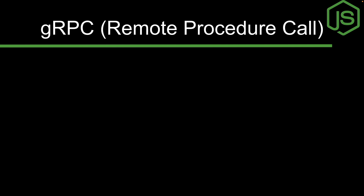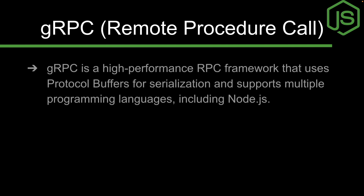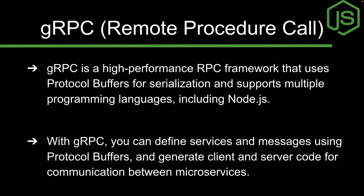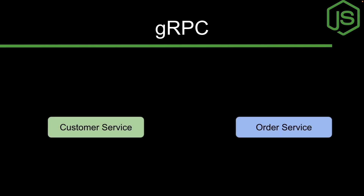The third popular communication method is gRPC — Remote Procedure Call developed by Google. gRPC is a high-performance RPC framework that uses Protocol Buffers for serialization and supports multiple programming languages including Node.js. You can define services and messages using Protocol Buffers and generate client and server code for communication between microservices. The best part of gRPC is that it uses HTTP/2 protocol to transfer data, making it five to seven times faster than normal REST API calls over HTTP.